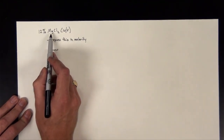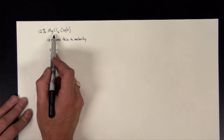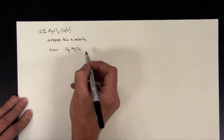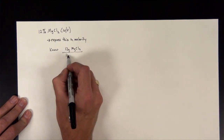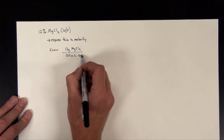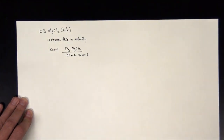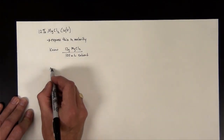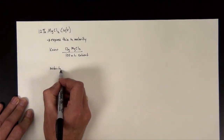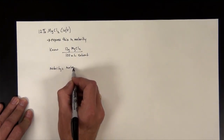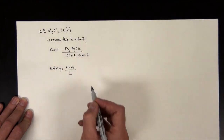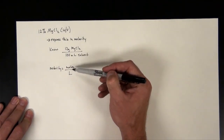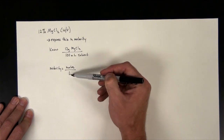We know that it's a 12% magnesium chloride solution. What this is telling me is that there are 12 grams of magnesium chloride per 100 milliliters total volume of the solvent. This is very useful to me, because I ultimately know that molarity is equal to the number of moles per liter, or final volume in liters. So one of the things I can do here quickly is convert this to liters.